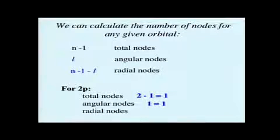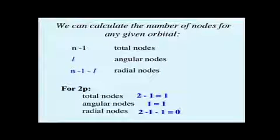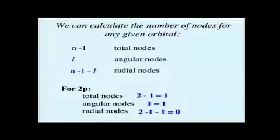And that means, since l is equal to one, we have one angular node, and that leaves us with how many radial nodes? Yep, zero radial nodes. So for a 2p orbital, all the nodes actually turn out to be angular nodes.